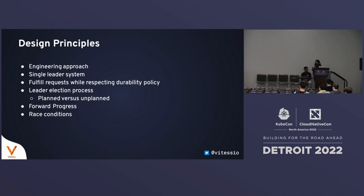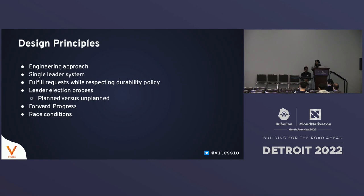We are not interested in algorithmic purity — we don't have to be the consensus algorithm. Vitess has a topology server, which can be etcd, ZooKeeper, or Consul, where we store some state and use it for discovery. We lean on the topology server to provide persistent state that helps in recovery. Vitess is a single-leader system, and one principle we maintain is fulfilling requests while respecting the durability policy chosen by the user. Durability versus availability is a configurable trade-off.